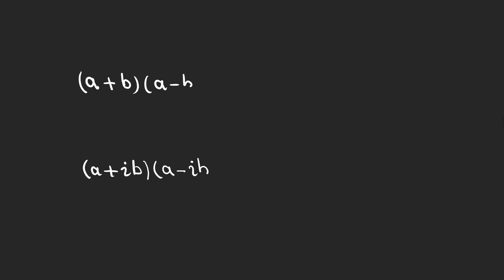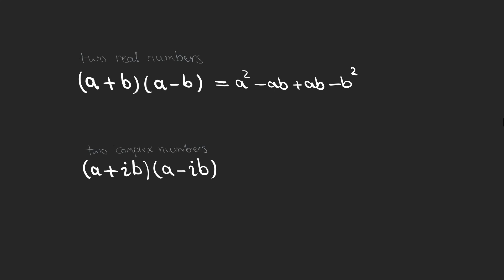Before getting to division, consider these two multiplications. For the first one with real numbers, we have a squared minus ab plus ab minus b squared — the middle terms cancel and we get a squared minus b squared. For the second one with complex numbers, we have a squared minus iab plus iab minus i squared b squared.